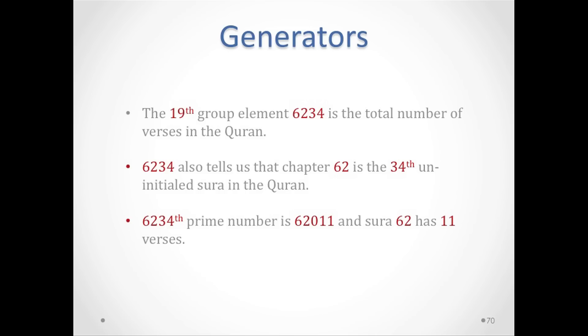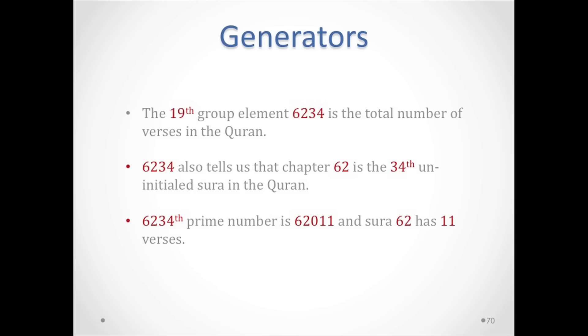You can think of which one generated which one. The fact that the Quran has 6234 verses generates the other fact that the number of verses from 1:1 to 19:98 is supposed to be 2346, or that one generates the total number of verses in the Quran. The 19th group element, 6234, also tells us that chapter 62 is the 34th uninitial chapter in the Quran. When you see the order of chapters in compilation and revelation, for both initial and uninitial chapters, there's a reason for that. Chapter 62 is not the 34th uninitial chapter by accident—it's because of this 19th permutation of 6234 or 2346.